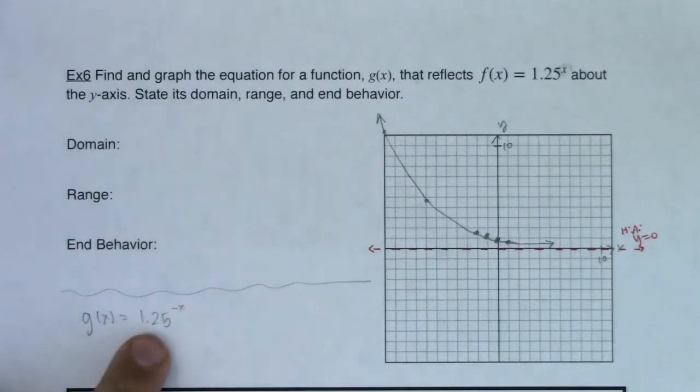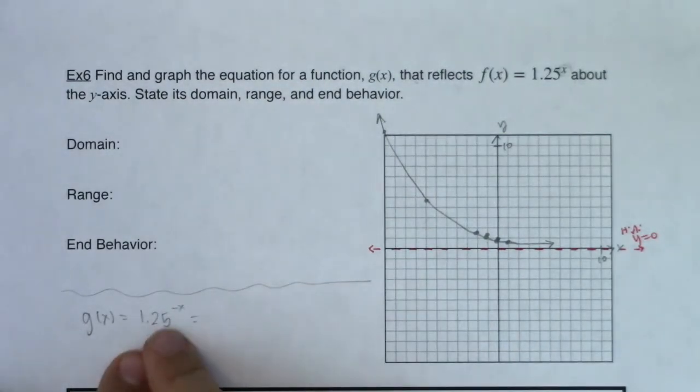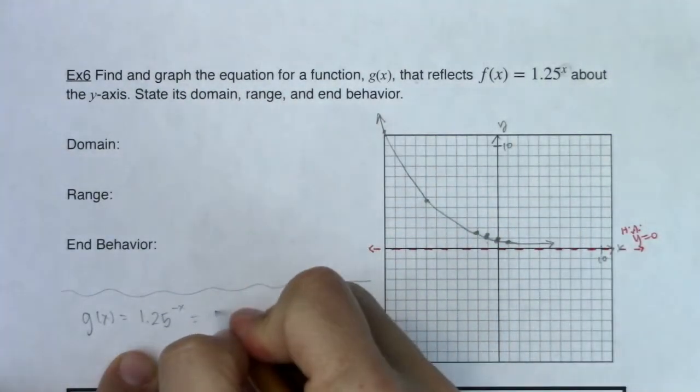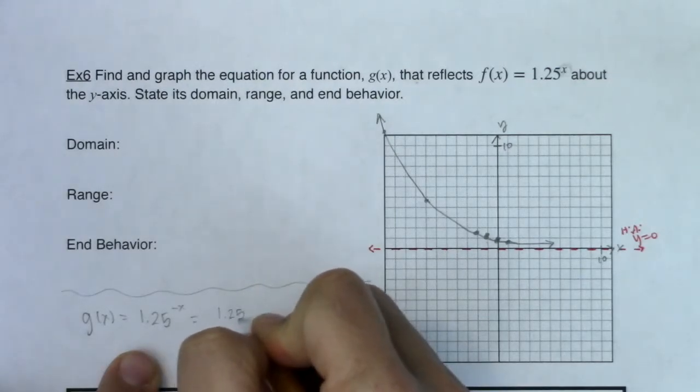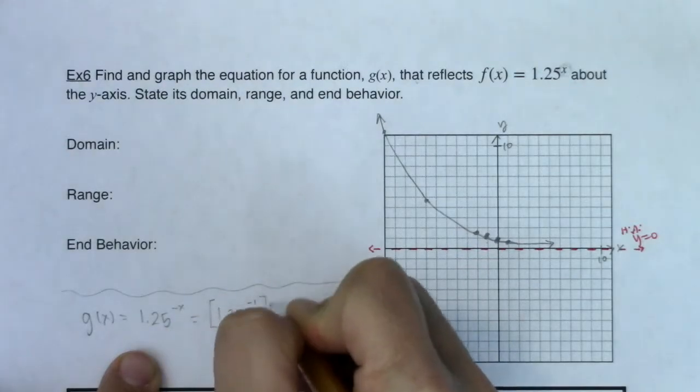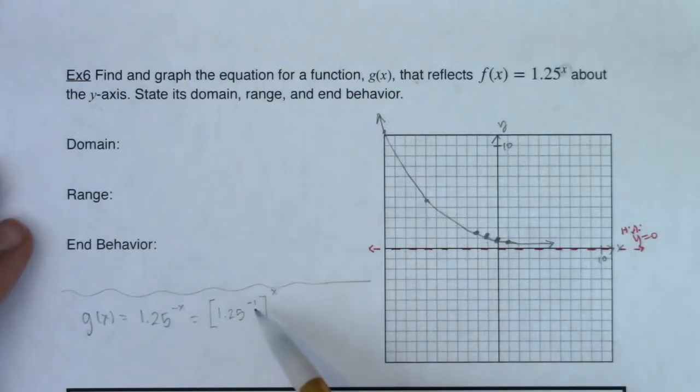I want to just deconstruct this a little bit. In case you're thinking, well, this could be a fraction because I have a negative exponent. It could, but let me show you what's going on here. I can unscramble this, and I could say this is 1.25 to the negative 1, and then all of that raised to the x power. And just go with me for a moment. When you have a power raised to a power, you would multiply the exponents. And negative 1 times positive x is negative x. So these two are equivalent.